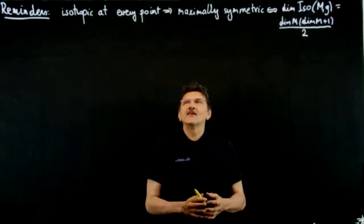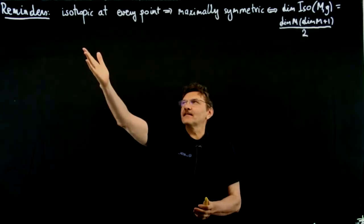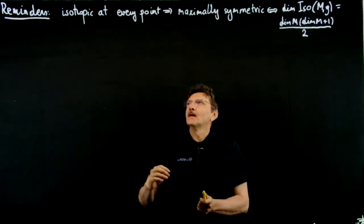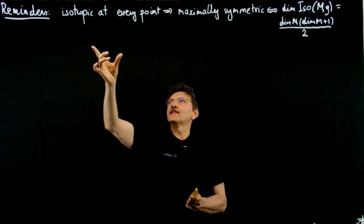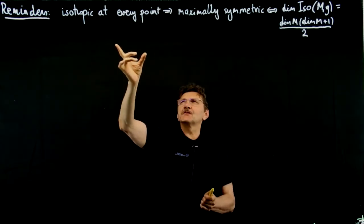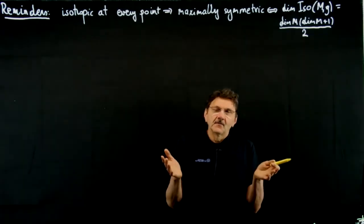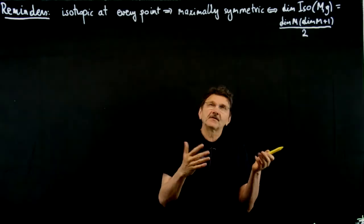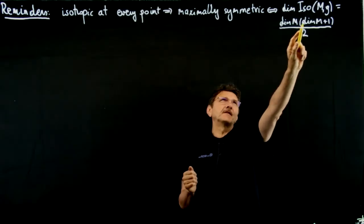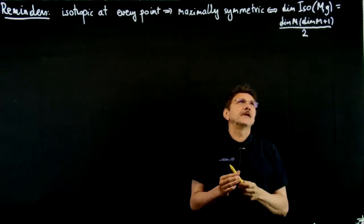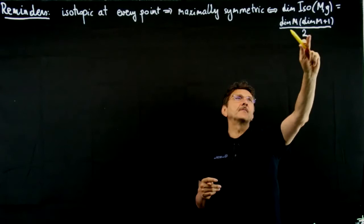Good afternoon everyone, I'm ready to roll. A reminder: this is plural, but in fact there's one. What we discussed or proved or outlined the proof is that if you have a manifold which is isotropic at every point, then it is homogeneous, but then isotropic at every point plus homogeneous is maximally symmetric. And maximally symmetric means that the dimension of the group of isometries of M is equal to n(n+1)/2, where n is the dimension of M.